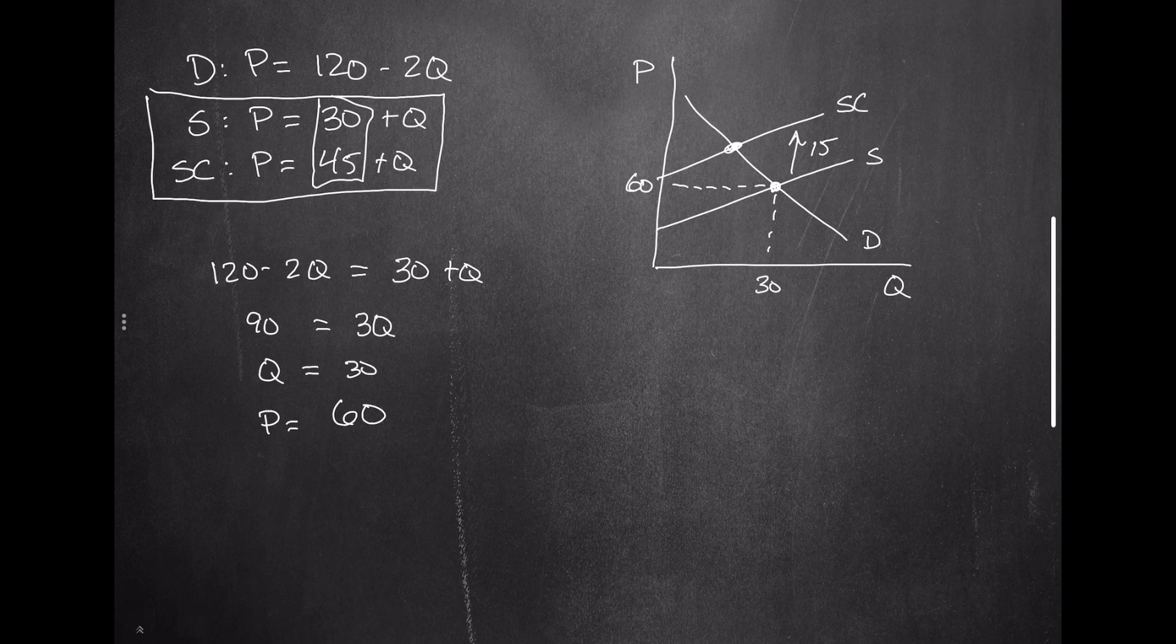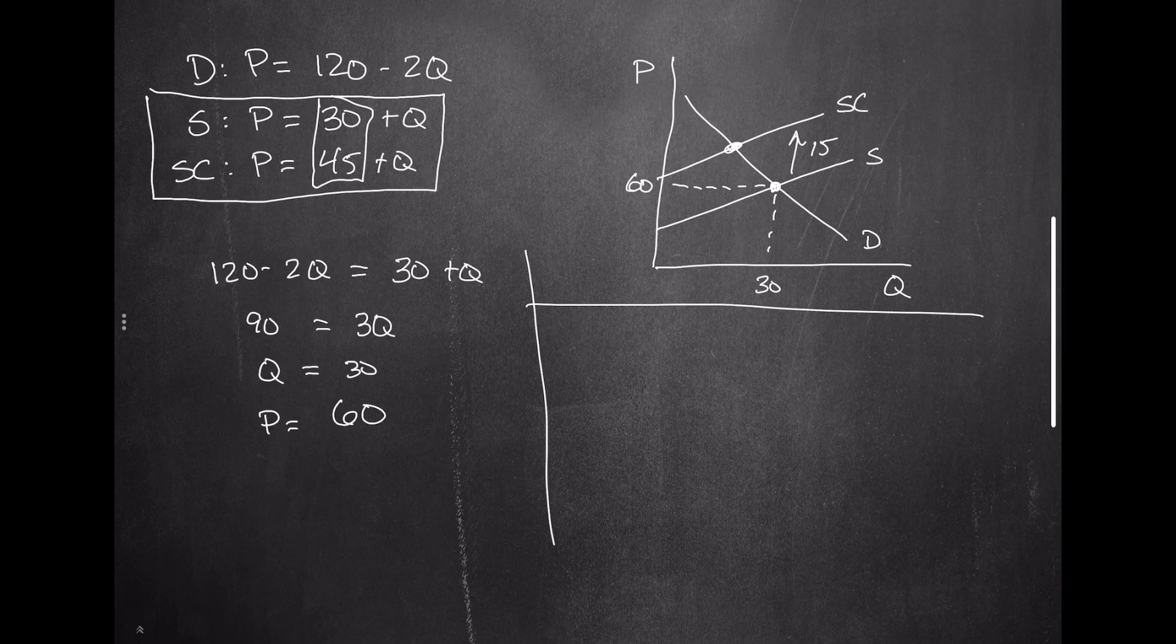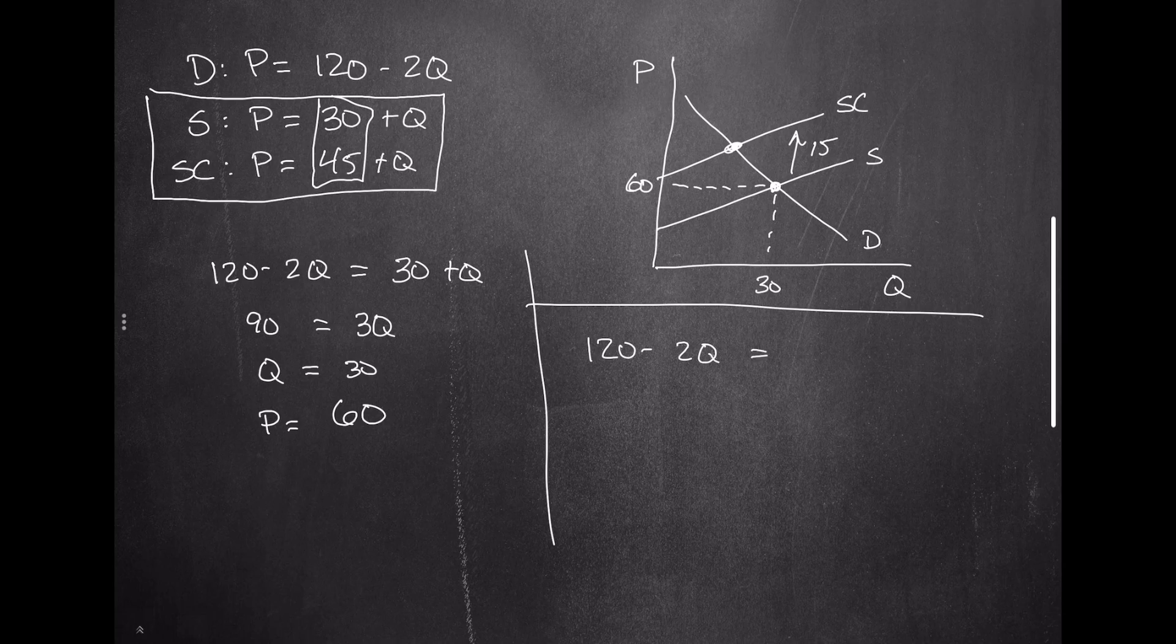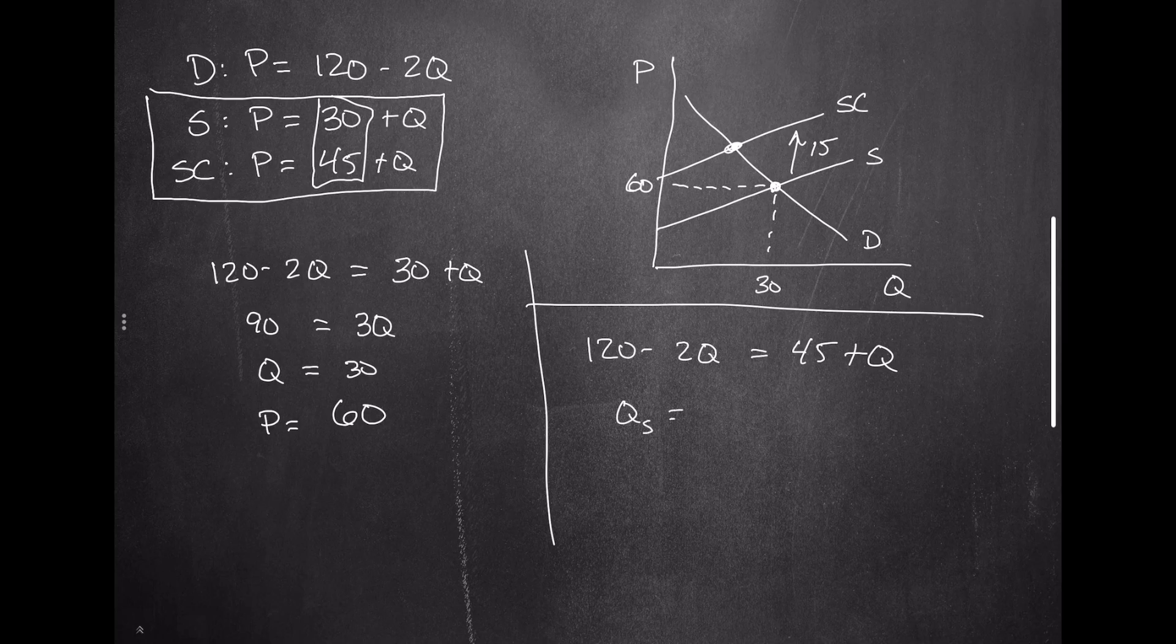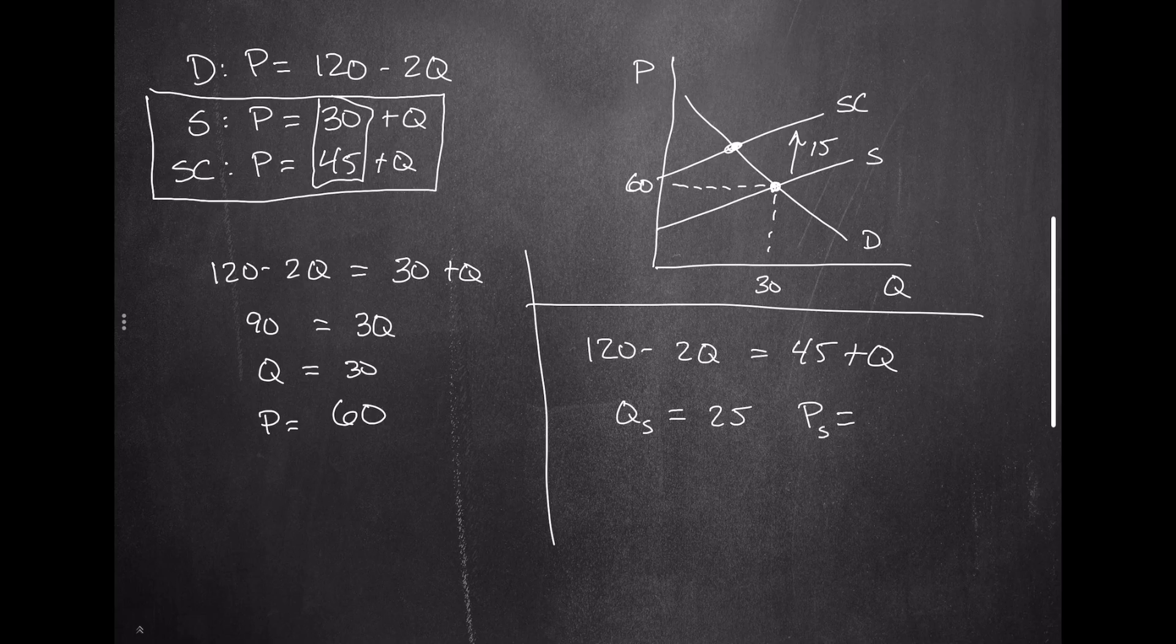If you want to solve for the socially optimal amount, all you'd have to do is set the private demand, 120 minus 2Q, equal to 45 plus Q. Through some algebra that I'll let you go through on your own, it looks remarkably similar to the previous algebra. You end up with the social quantity equal to 25 and the socially correct price equal to 70.